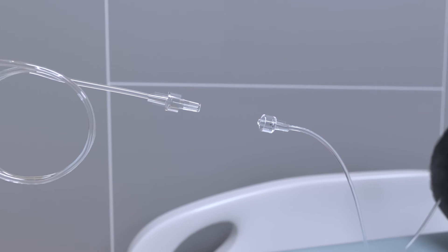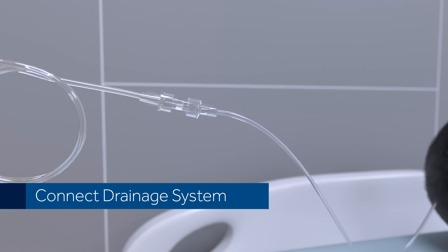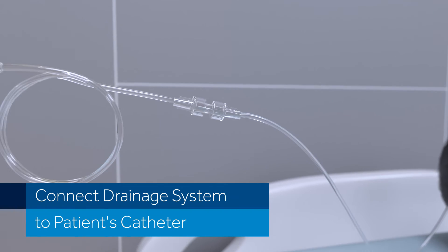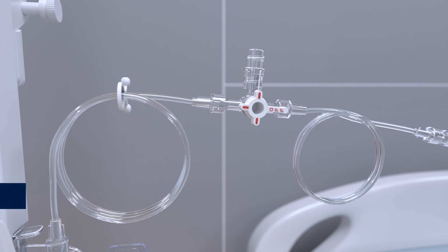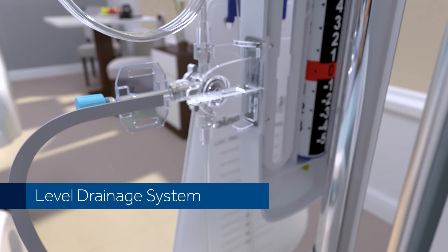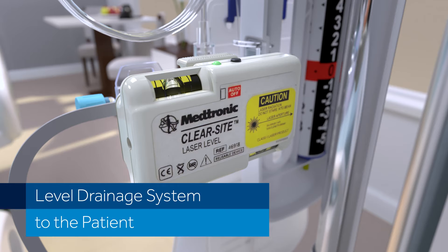Using sterile technique, attach the patient's catheter to the end of the patient line. Be careful to prevent air bubbles from being introduced into the patient line. The clear sight laser level can be used to level the drainage system to the patient.